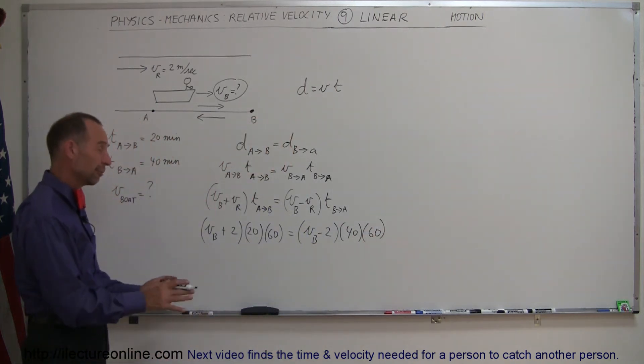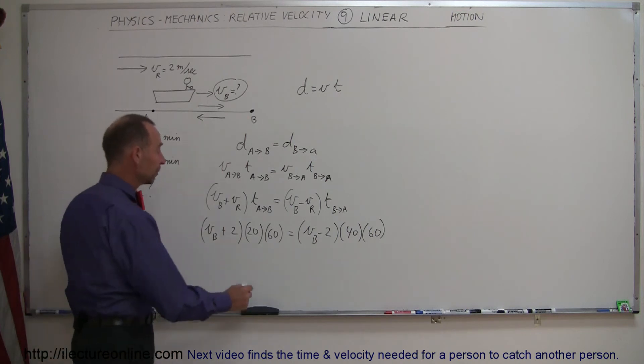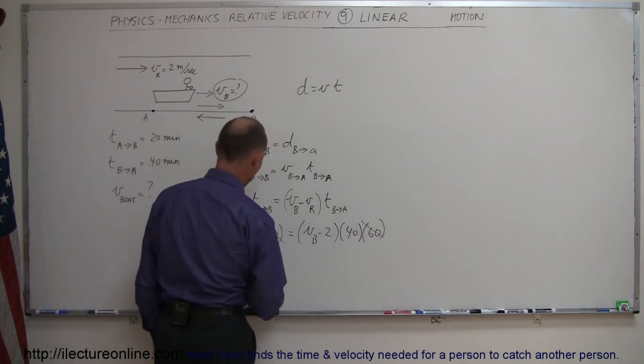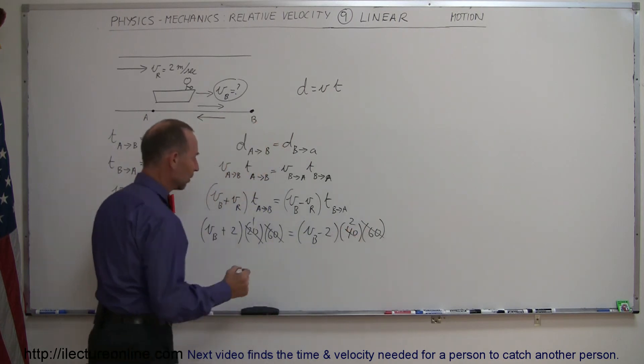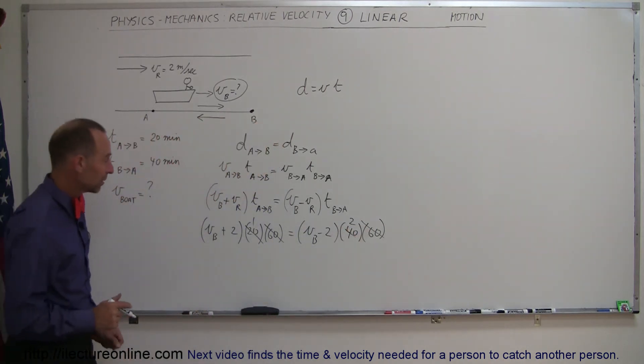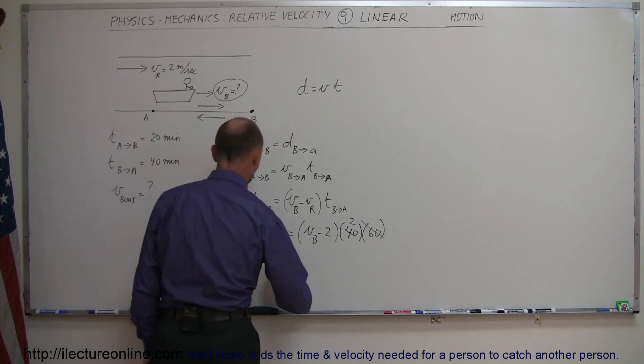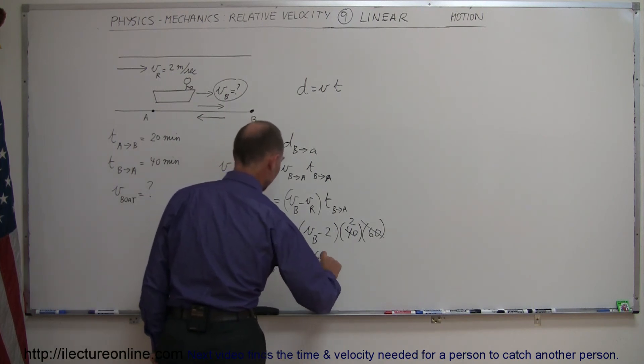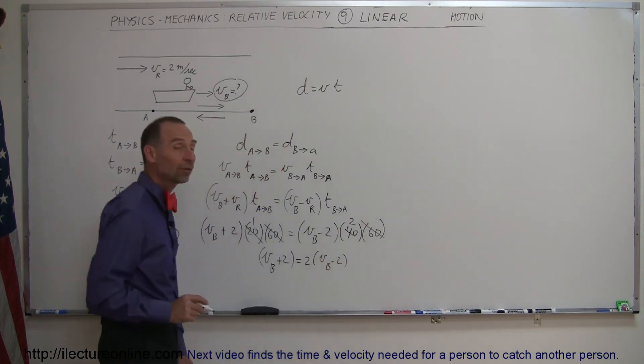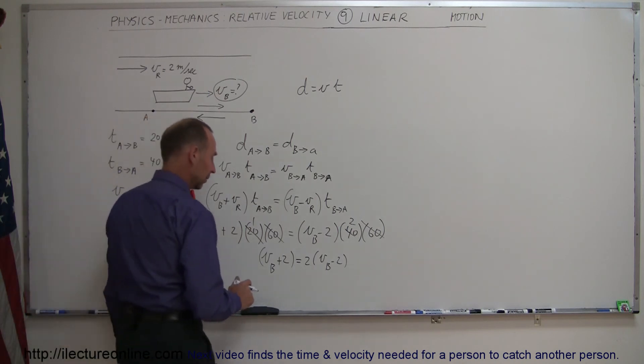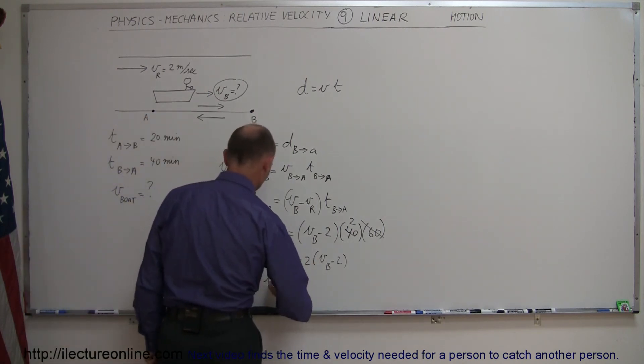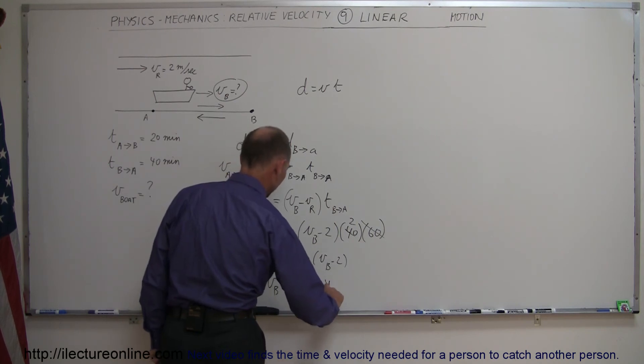Now right away you realize I didn't need to convert because I simplify the equation. 60 cancel out with 60. 20 and 40 I can divide both sides by 20. This becomes 1 and this becomes 2. So now I can go ahead and rewrite the equation. So I have the velocity of the boat plus 2 is equal to 2 times the velocity of the boat minus 2, and I have to solve that equation of course for the velocity of the boat. Multiplying the right side and get rid of the parentheses, we have V sub B plus 2 equals 2V sub B minus 4.